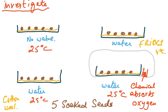Wherever the syllabus says 'investigate' you must know the practical procedures. We take four petri dishes, add the same mass of cotton wool to all of them, and then add five soaked seeds to each. Soaked seeds means they have been kept in water for about five to six hours and then placed on the petri dish.